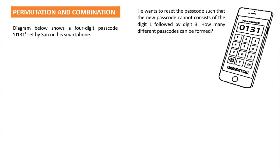When you read questions from this chapter, the first important thing is to know whether it is a permutation question or a combination question. For permutation, the most famous keyword is 'arrangement.' Some questions also use the word 'code' — you can see 'passcode' here, which confirms this is a permutation question. Numbers that are arranged go into permutation.